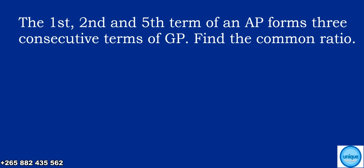Let's see how we solve this problem. It's about progressions. The question reads: the first term, second term, and the fifth term of an AP form three consecutive terms of a GP. So using that relationship, we should find the common ratio. Let's do our solution.